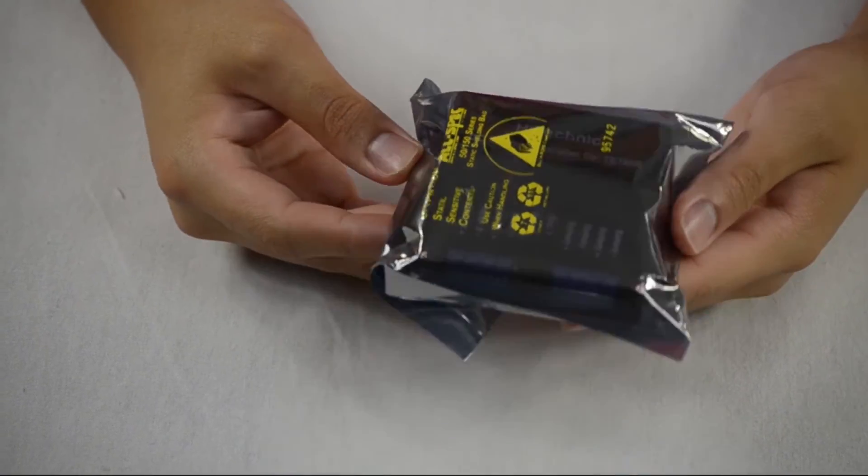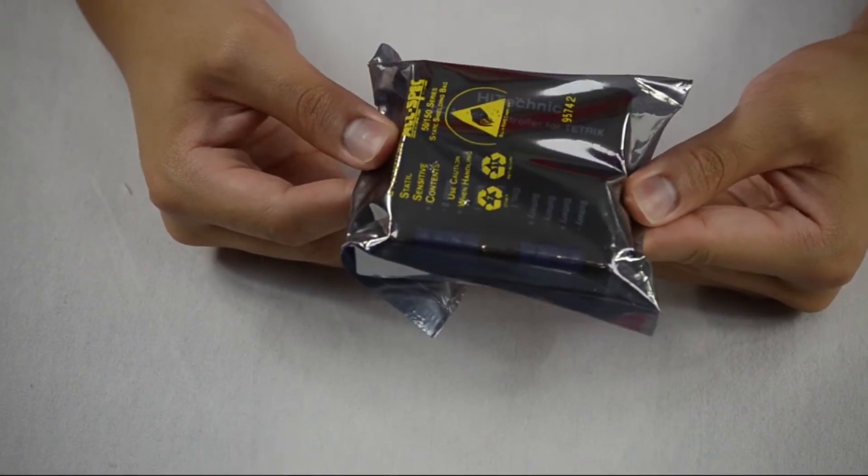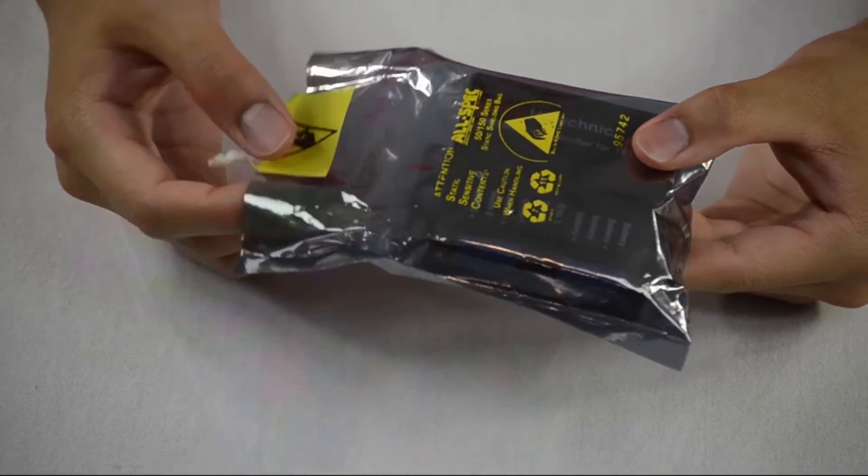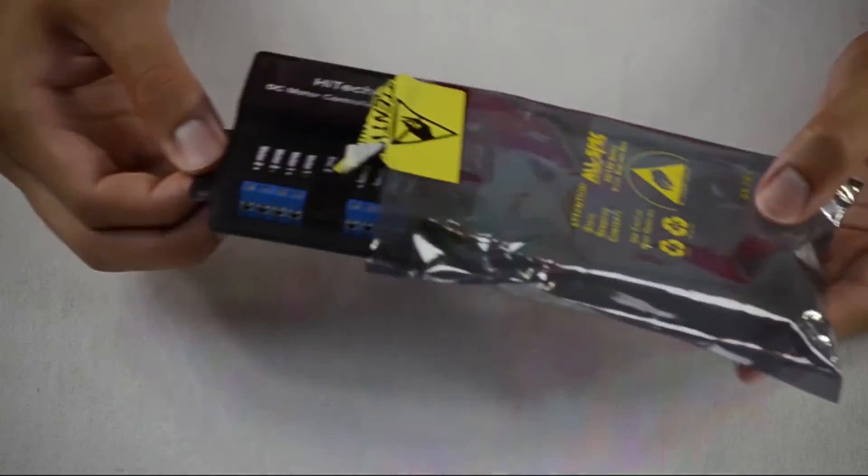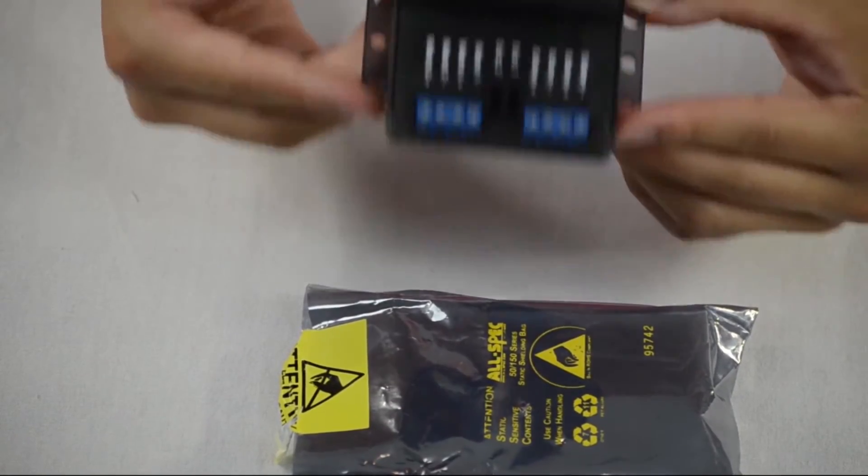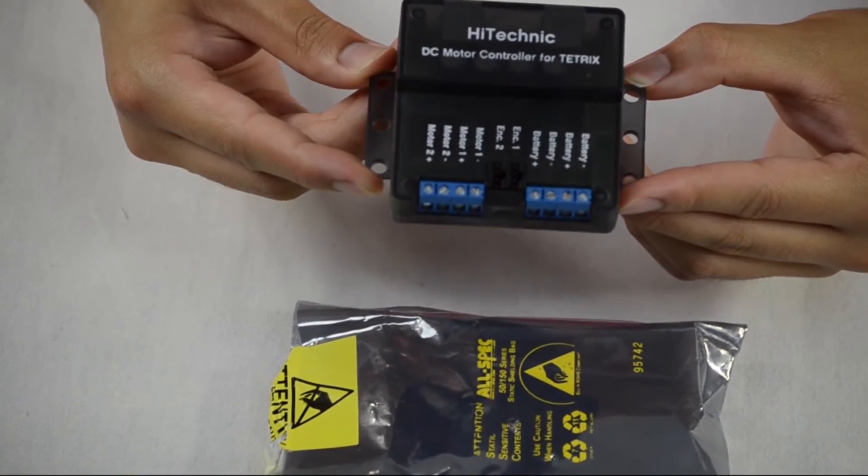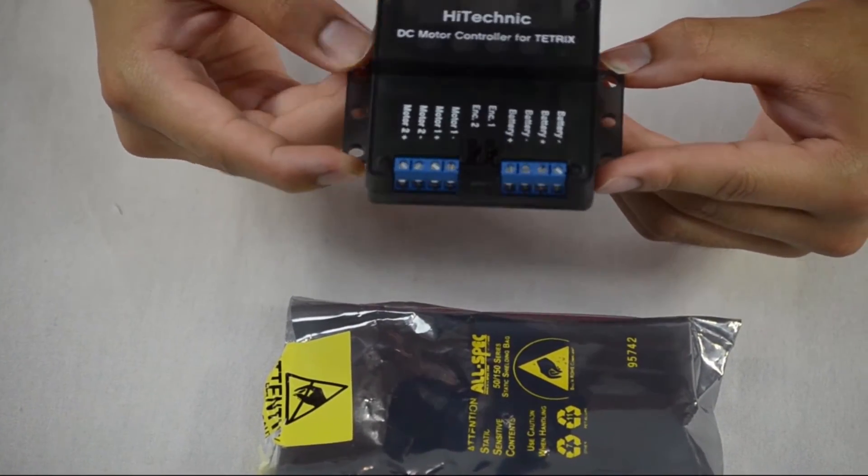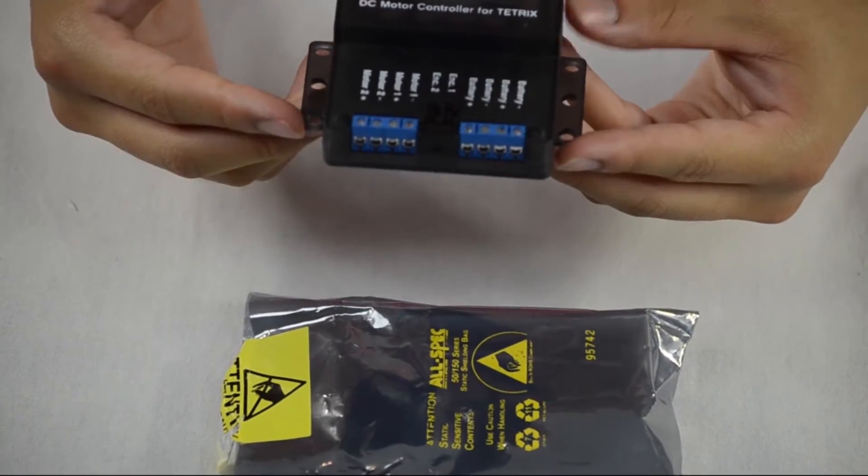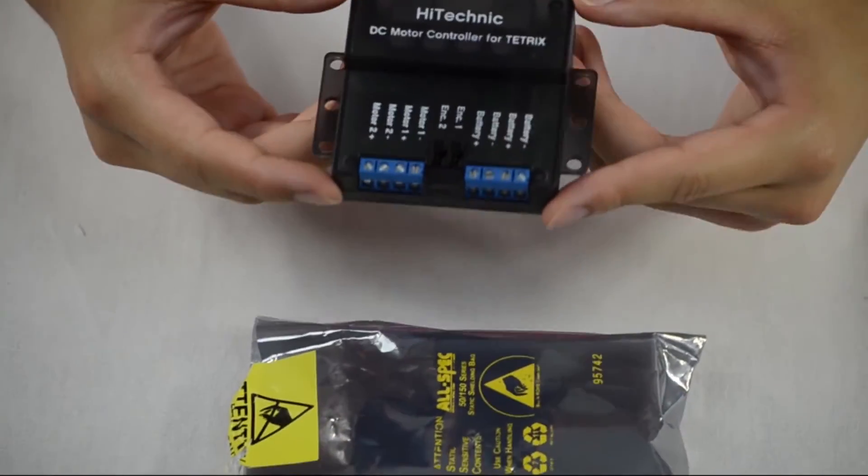So this is an anti-static electricity bag. What it basically does is protects the controller inside from any static elements. It's very important to keep this static-free or from getting any charge from static electricity because it can make it malfunction and do weird sorts of stuff that you don't want to do.